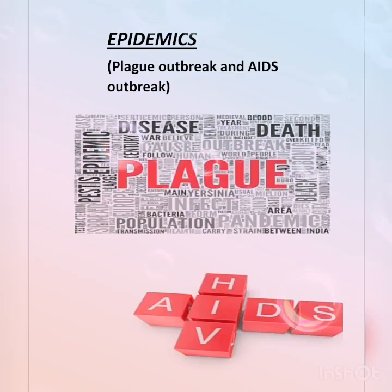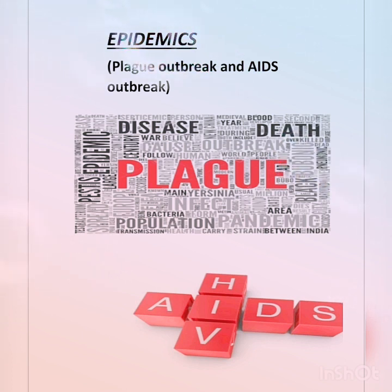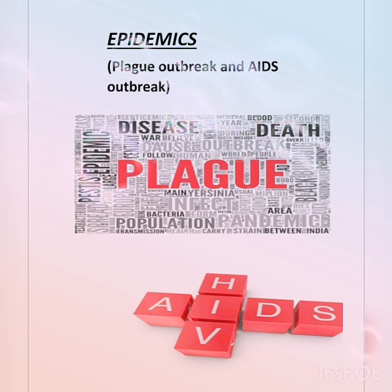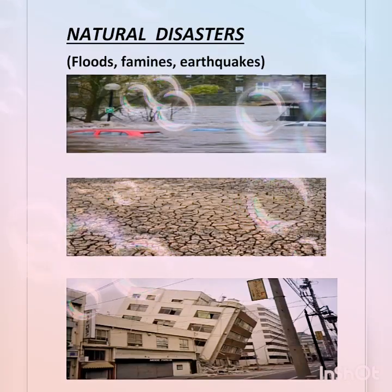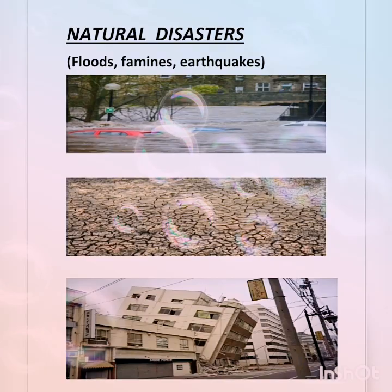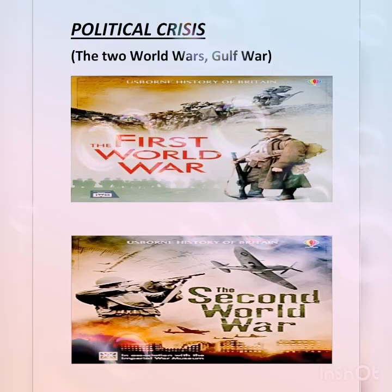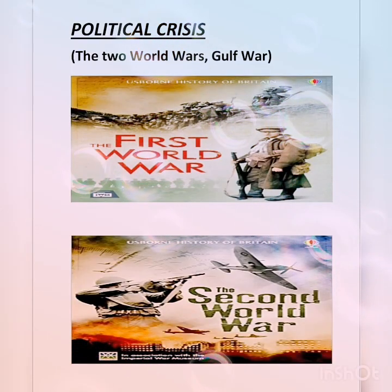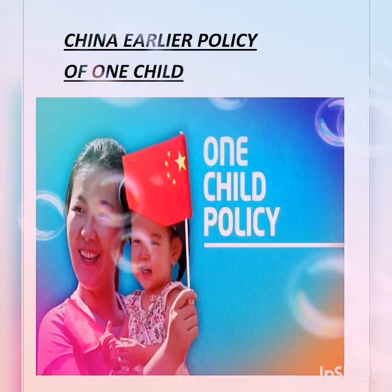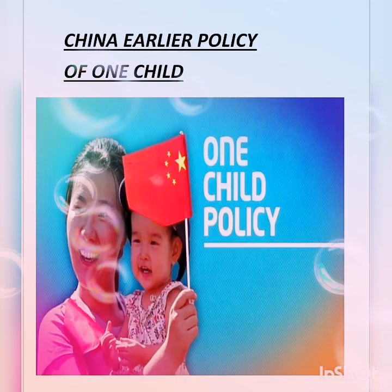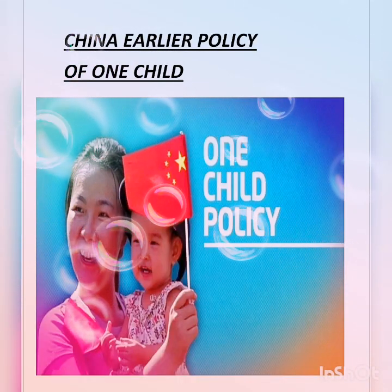Although population has always been constantly increasing, except during the following events: epidemics, outbreak of plague in the Middle Ages and outbreak of AIDS in Africa, natural disasters such as floods, famine, and earthquakes, political crises, the two World Wars and the Gulf War, and China's earlier policy of one child, which reduced the population to a certain extent.